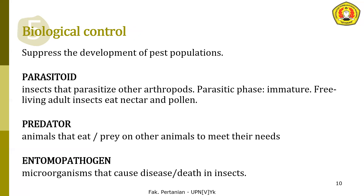Number five is biological control. It involves managing the environment to make it less suitable for pests by using microorganisms, other organisms, or insects like parasitoids. A parasitoid is an insect that parasitizes another host. A predator is an animal or insect that eats or preys on other animals. (Parasitoid memparasit; predator memakan.) Entomopathogen is a microorganism that causes disease or death in insects.